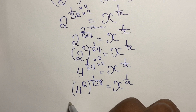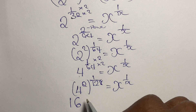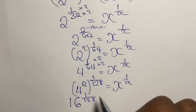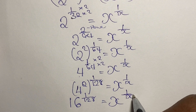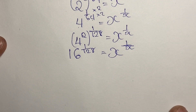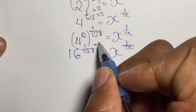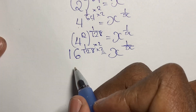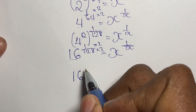4 squared gives us 16, so we have 16 to the power of 1 over 128 equal to x to the power of 1 over x. Looking again, our base is 16 and the denominator of the exponent is 128, so we still need to continue the same approach until they are equal.